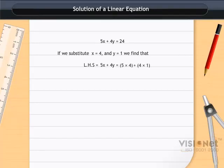× 4 + 4 × 1 = 20 + 4 = 24, which equals the right hand side. So x = 4 and y = 1 is a solution of the linear equation.